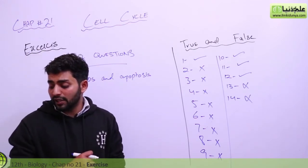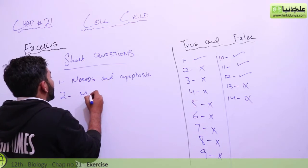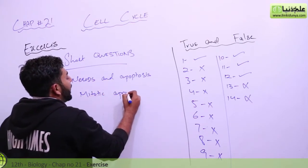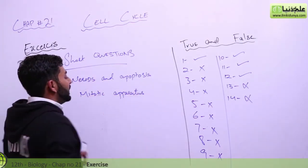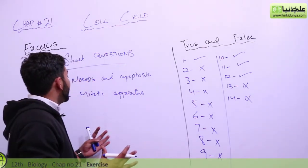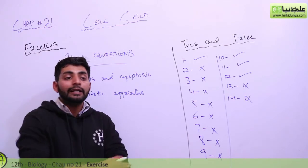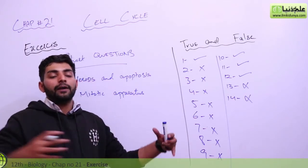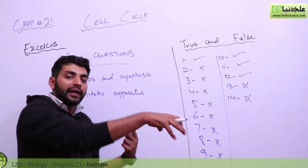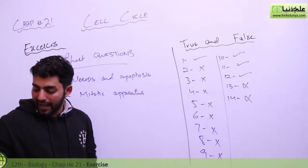Second short question: what are the functions of the mitotic apparatus? The mitotic apparatus consists of spindles and asters. You have spindle fibers attached to the chromosomes, and the mitotic apparatus helps in separating the chromosomes during cell division.